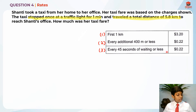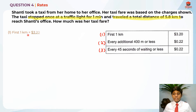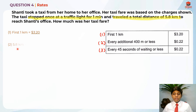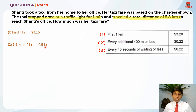For the first kilometer, we know it costs $3.20, so I'm underlining this because in the end we'll be adding parts one, two, and three together. For part two, I'm going to subtract 1 kilometer from 5.8 km because we already calculated that value, giving us 4.8 km remaining.